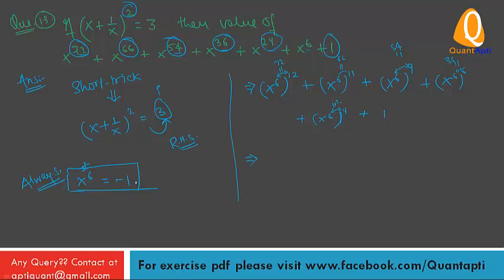Now put the value x raised to power 6 is minus 1. So we get: minus 1 raised to power 12, plus minus 1 raised to power 11, plus minus 1 raised to power 9, plus minus 1 raised to power 6, plus minus 1 raised to power 4, plus 1.